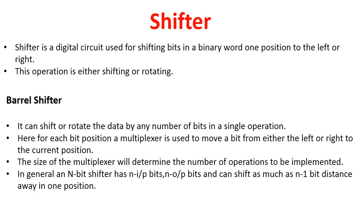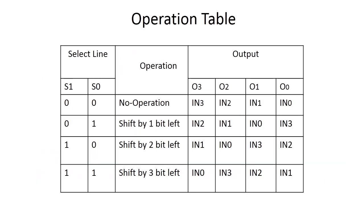Now let us take the same example. If we have a 4-to-1 MUX, then we can have 4 input bits, 4 output lines, and we can shift 3 positions in a given operation. The reason is n minus 1, which here is 4 minus 1 equals 3. So we can perform 3 shifts either left or right, or we can rotate, with the help of the operational shifter.